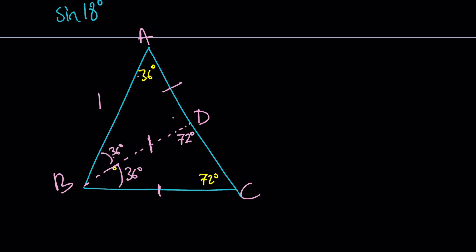Notice that if this is X, this is also X and this is also X. And since ABC is isosceles, the whole thing is 1. AD is X. DC must be 1 minus X. We formed our triangle. Now we're going to use similarity.